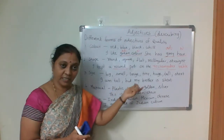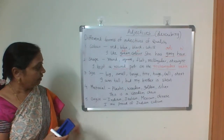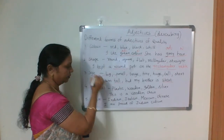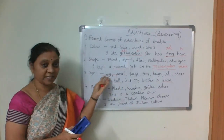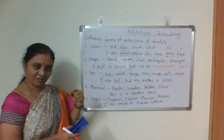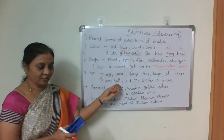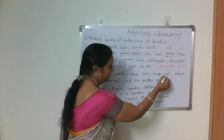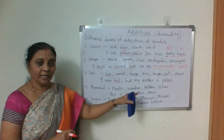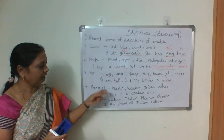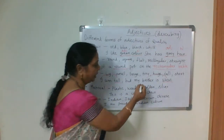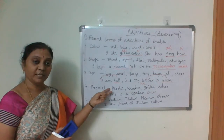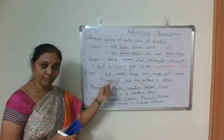For size: big, small, large, tiny, huge, tall, short. For example: 'I am tall, but my brother is short.' Tall describes 'I' — a pronoun — and short describes 'my brother,' which is equal to 'he.' So adjectives describe noun or pronoun. Tall and short are both adjectives of size.